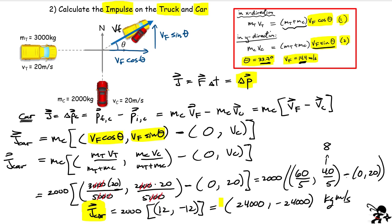Does this make sense? The impulse on the car has a positive x component and a negative y component, so it points in a direction toward the southeast. That makes sense: the car was traveling north, then after the collision it's deflected eastward, so the force on it must have an eastward and southward component.